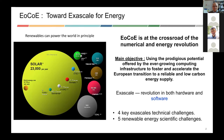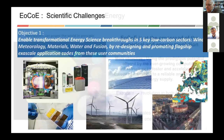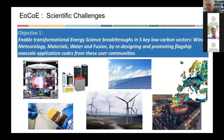ECHO is related to these two revolutions that must happen. It is organizing four key exascale technical challenges and five renewable energy scientific challenges. We are concentrating on five low carbon energy sources: meteorology, material, water, fusion and wind.